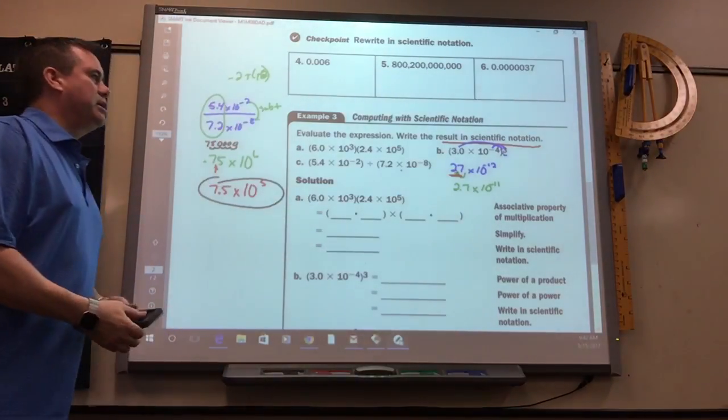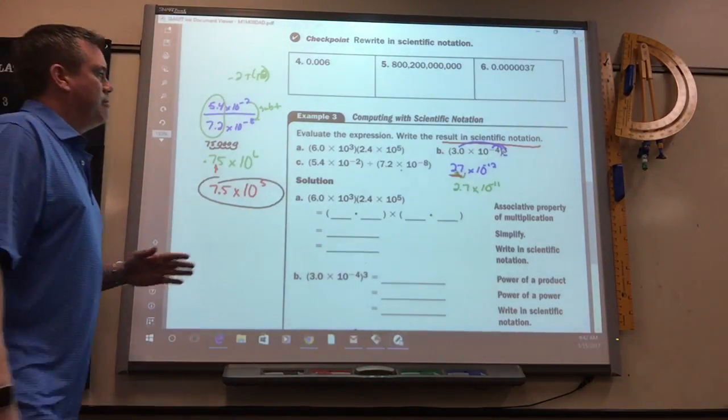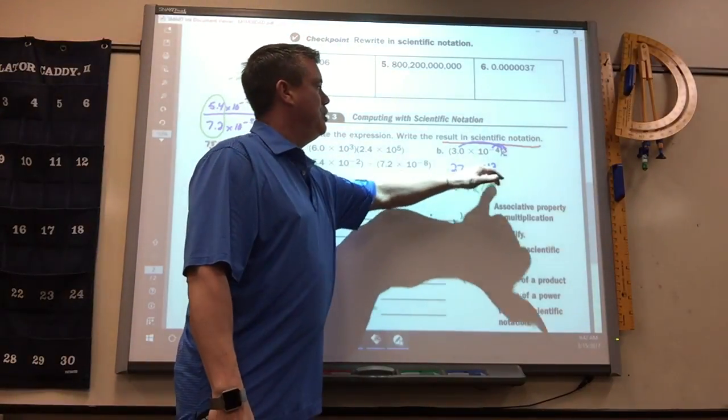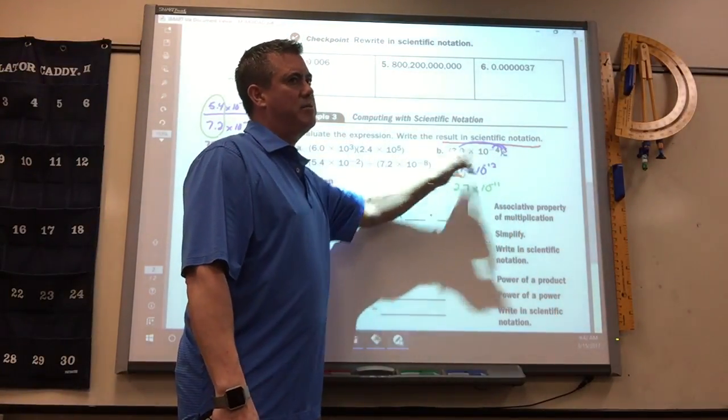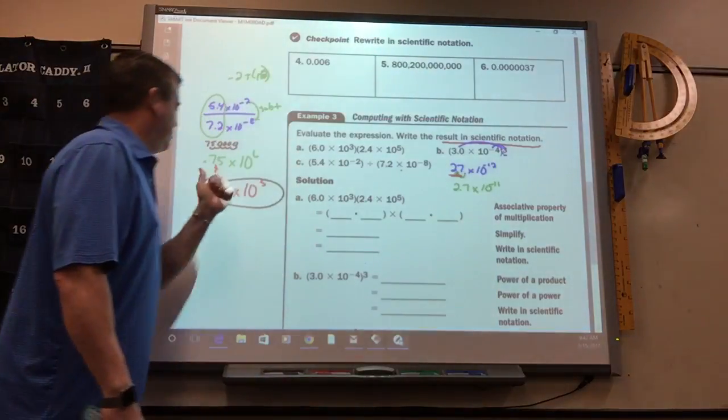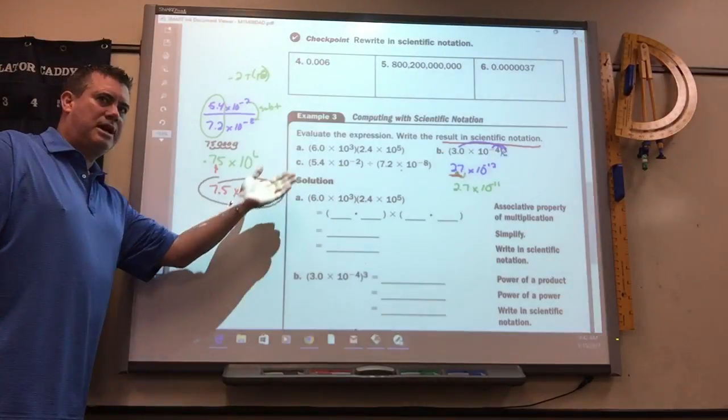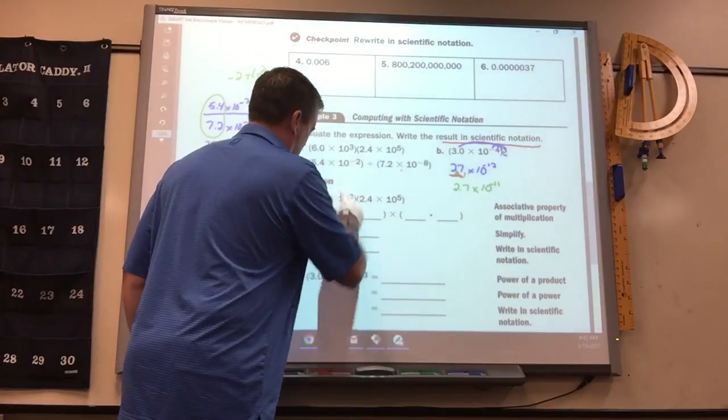So, again, however you can remember it, if the decimal is too far to the right, you just add however many spots you've got to move it. If it's too far to the left, you subtract however many spots you've got to move it.